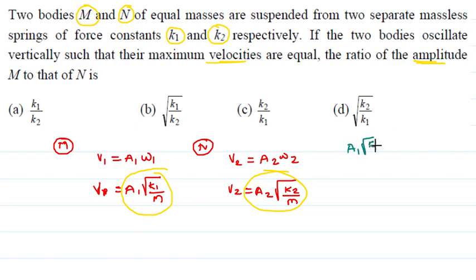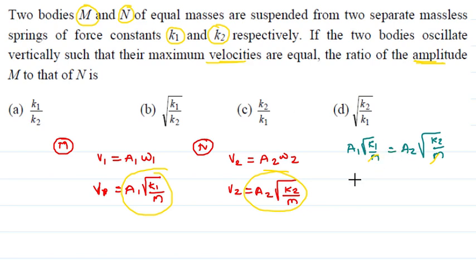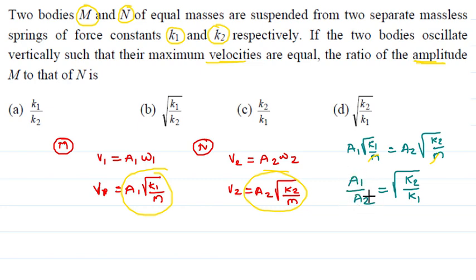Since maximum velocities are equal, a1 times under root of k1/m equals a2 times under root of k2/m. The m's cancel out, so a1 upon a2 equals under root of k2 upon k1. This is the required ratio of amplitudes — option D is correct.